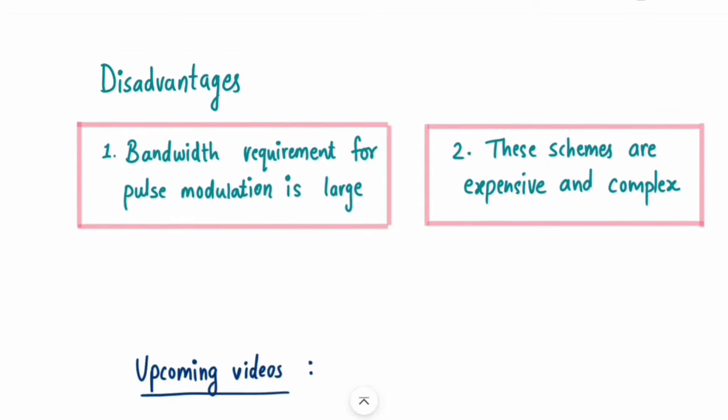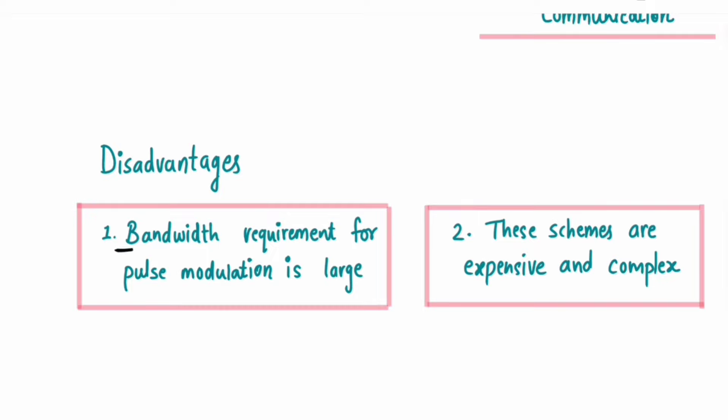Now the disadvantages. What is the disadvantage? The bandwidth is more. Because this is Pulse Modulation, the bandwidth requirement is more.